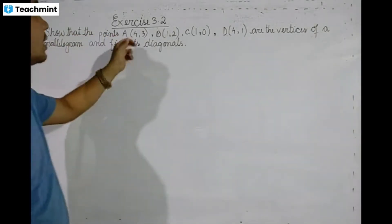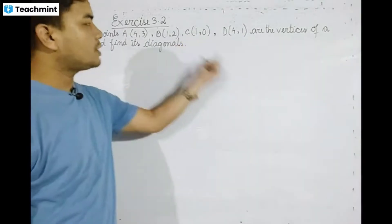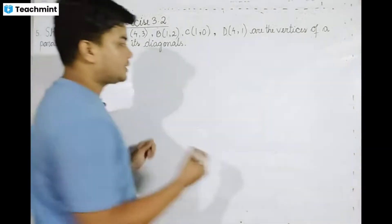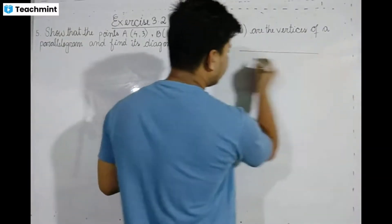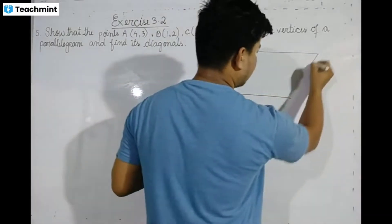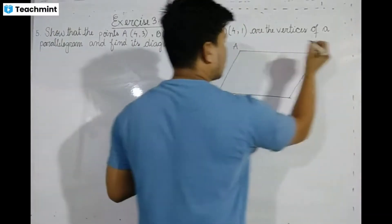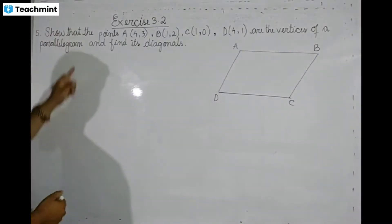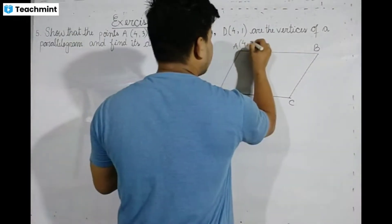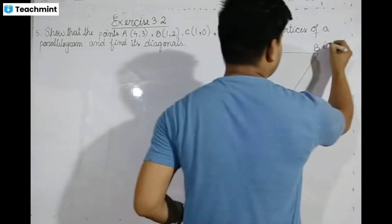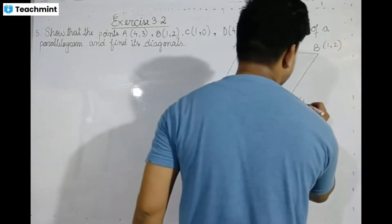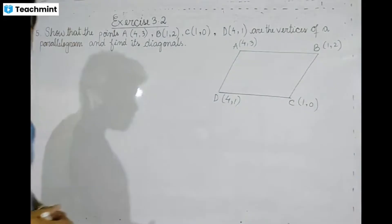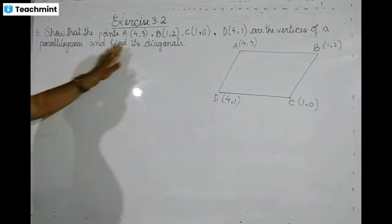The points A(4,3), B(1,2), C(1,0), D(4,1) are vertices of a quadrilateral. We are given coordinates: A has coordinates (4,3), B has coordinates (1,2), C has coordinates (1,0), and D has coordinates (4,1). We need to find the vertices and check the diagonals.